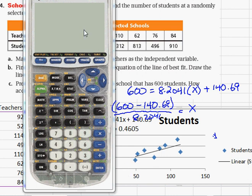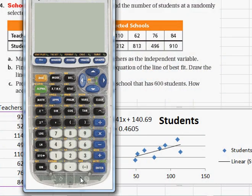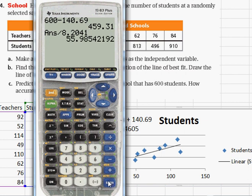Let me get out of annotation here and get back to the calculator. We're going to go 600 minus 140.69. We wind up getting 459.31. Then if I divide that by 8.2041, I wind up getting an answer of about 56.